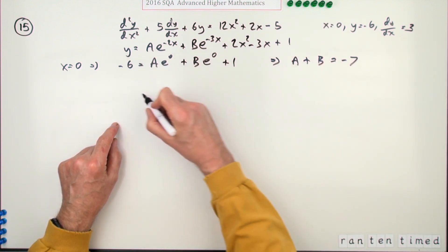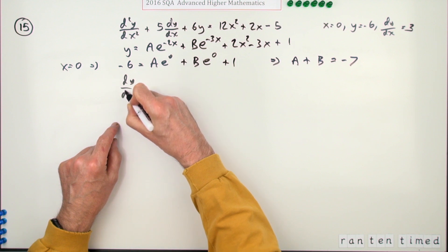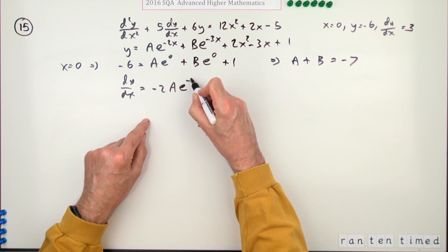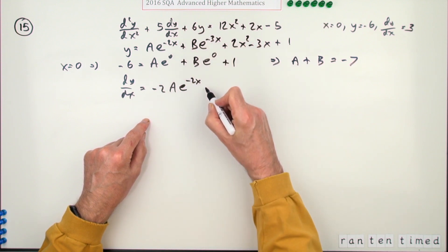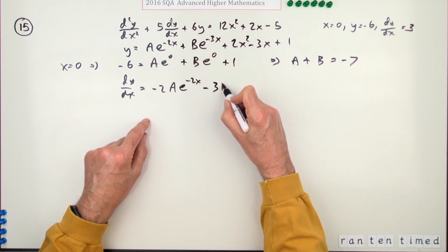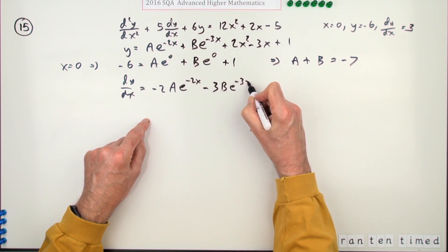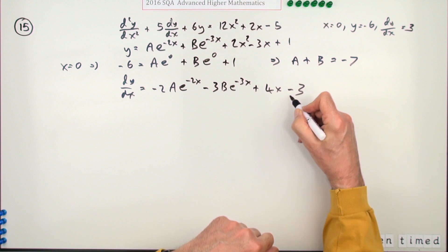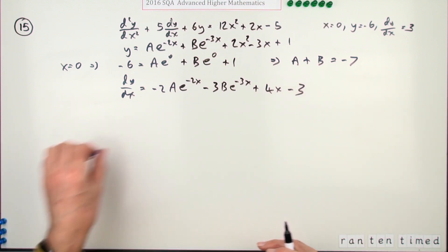Right, now in order to use this part of the initial conditions, I need to differentiate this. dy/dx is going to be, so that'll be negative 2Ae to the negative 2x, negative 3Be to the negative 3x, plus, and that will be 4x minus 3. And doing that gets you a mark.